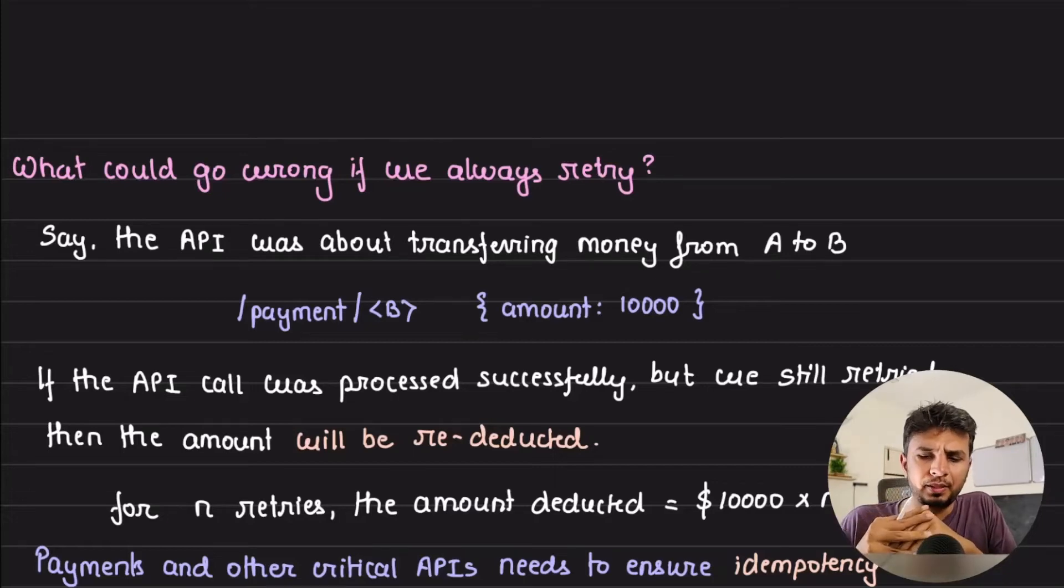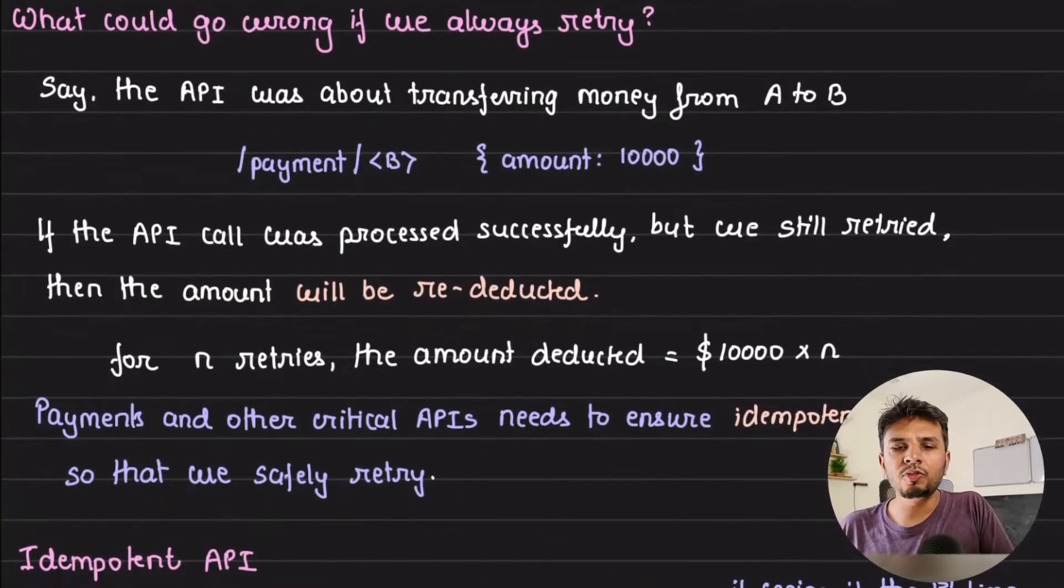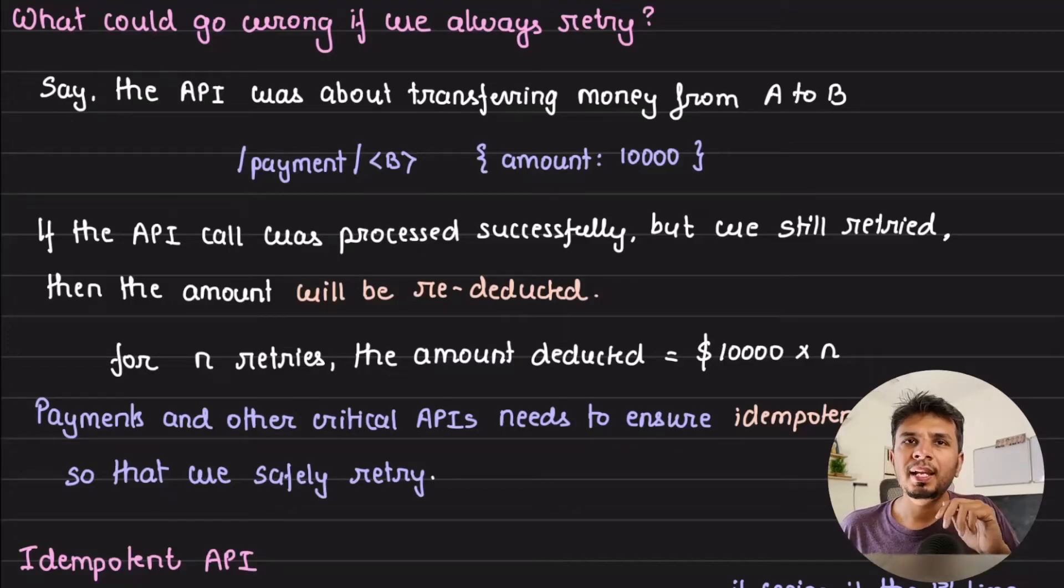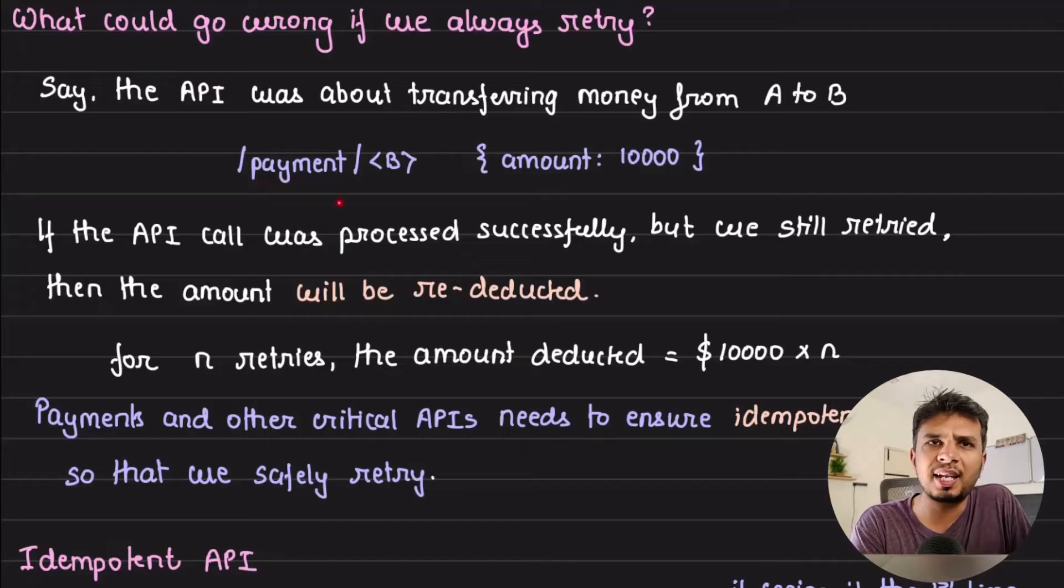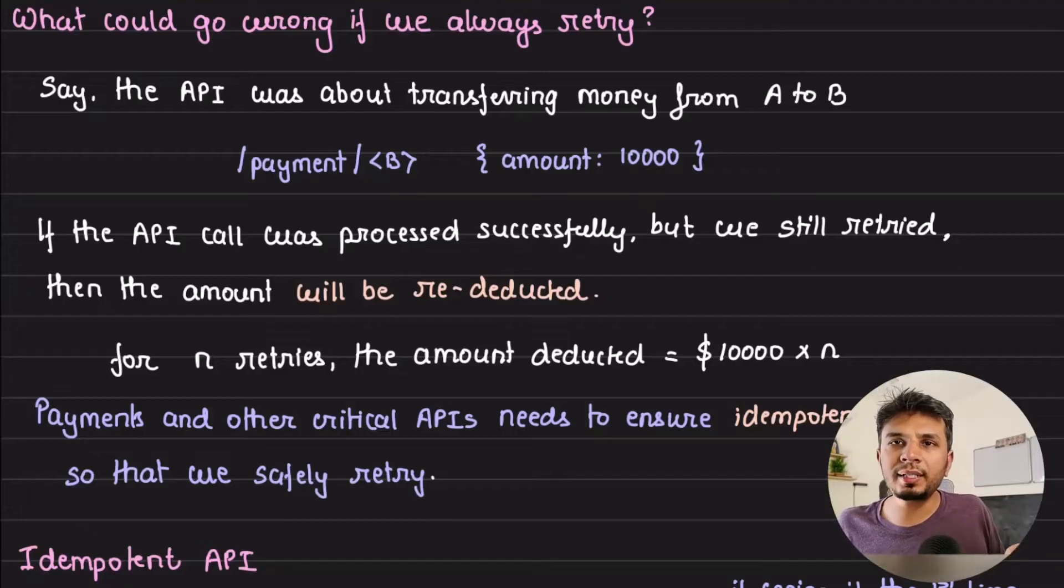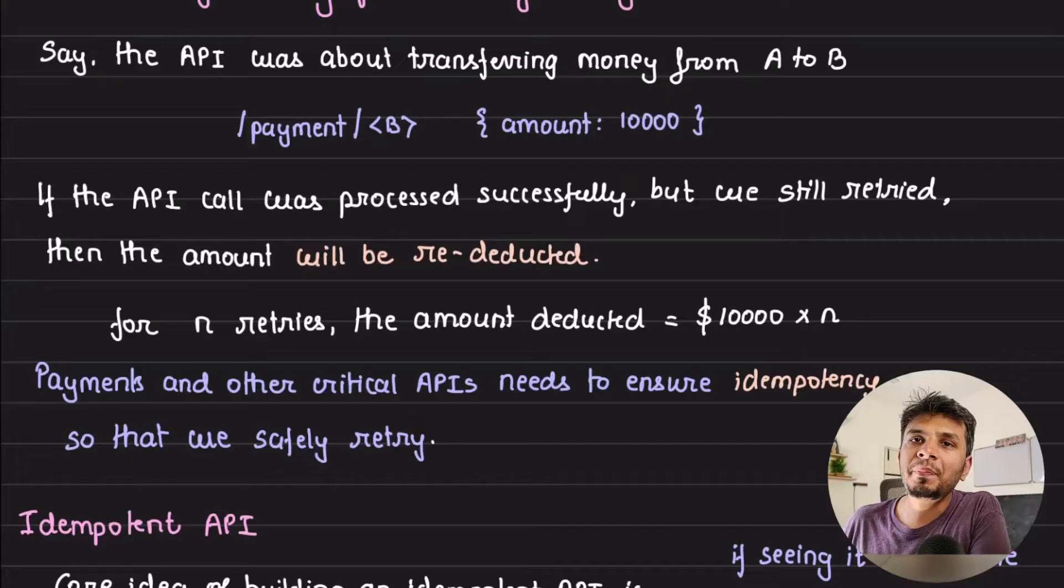If we just by default always do an automatic retry there is a chance where some critical endpoints might lead to an unintended behavior. For example, let's say with a payment service where you have an API that transfers money from A to B's account, and you have a URL /payment/<B> where you pass in the amount. Let's say you want to transfer $10,000 to user B. If we just automatically retry every time we see a failure, if we retry N times it's very much possible that we might be deducting N × $10,000 from A and moving it to B. It's totally unintended. So in this case we cannot just blindly retry unless we know that server has definitely not processed it.